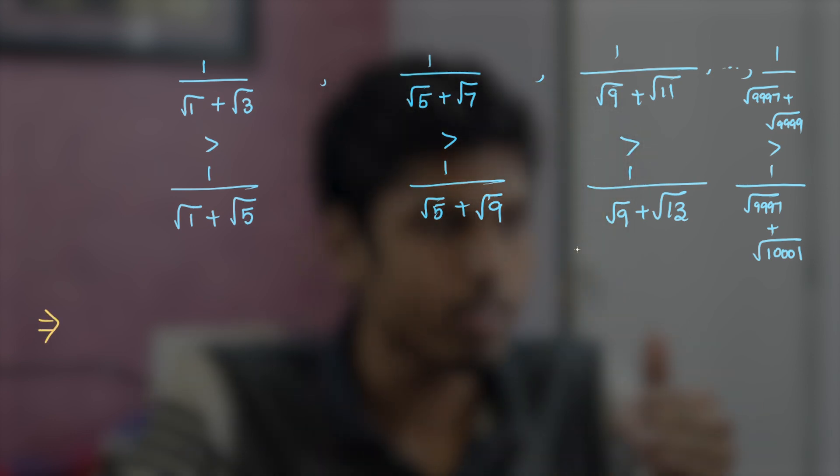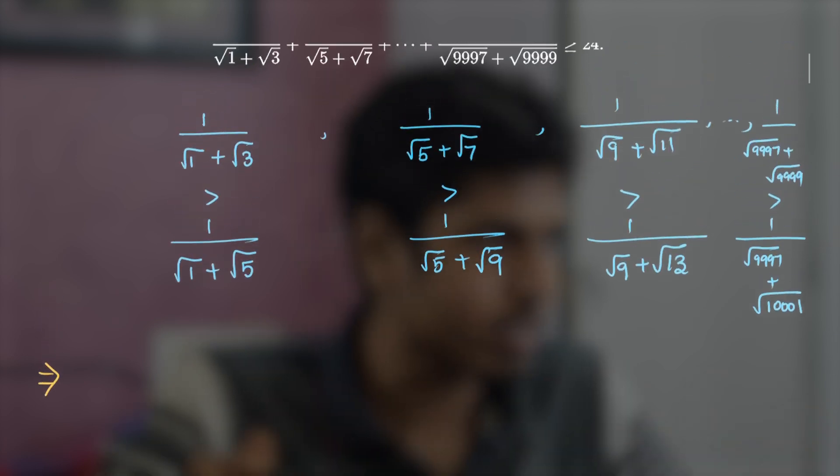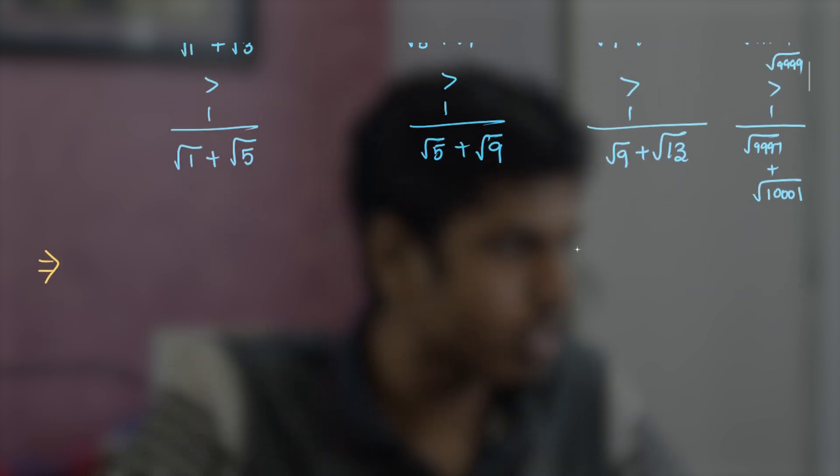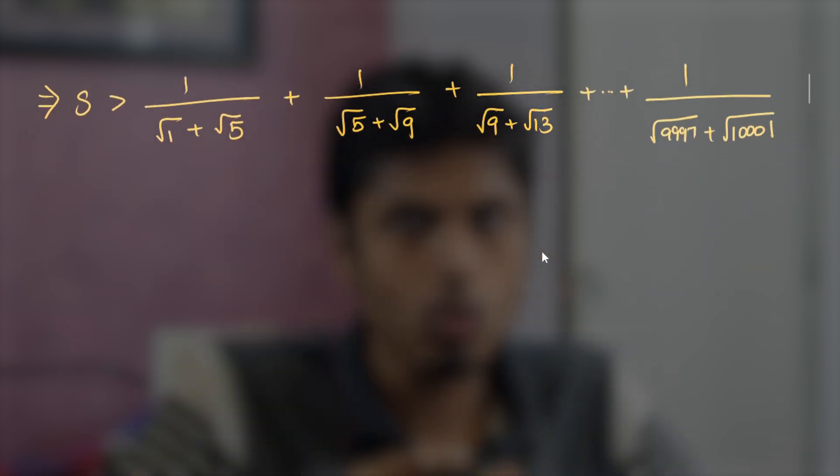If one adds all these inequalities, the LHS would be the sum which is given in the question, which goes like 1 by root of 1 plus root of 3 till 1 by root of 9997 plus 9999. Let's call it as S. So we get S to be greater than 1 by root 1 plus root 5 plus 1 by root 5 plus root 9 plus 1 by root 9 plus root 13 and so on till 1 by root 9997 plus root 10001.